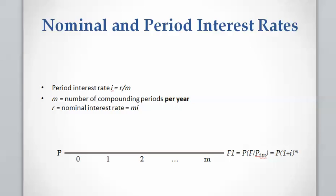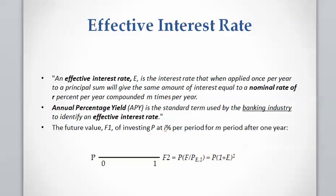You also need the period interest rate. For example, the future value F at the end of year one equals P multiplied by (1 + i) to the power M, where M is the number of compounding periods per year. An effective interest rate is the interest rate that, when applied once per year, gives you the same amount of interest as the nominal rate R.